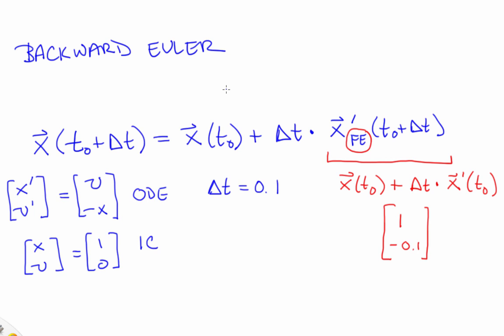We did this before. We know what the result of taking one forward Euler step forward under the influence of that dynamics from that initial condition with that time step. That's the value over there, one, negative 0.1. Here's how you figure out where backward Euler will go.